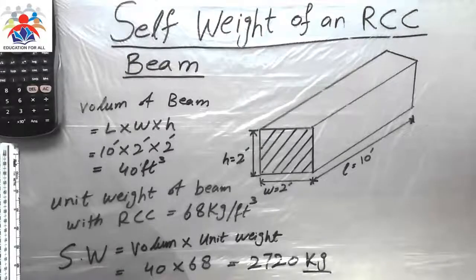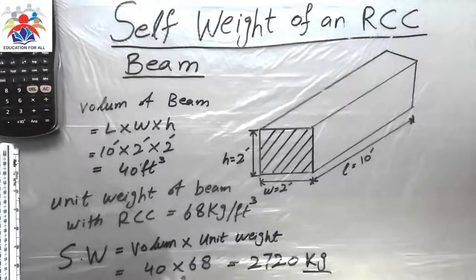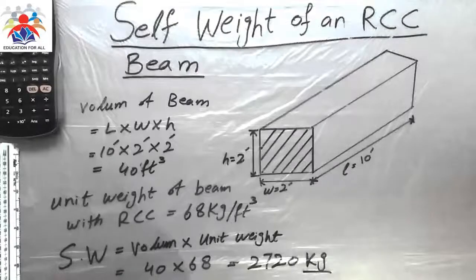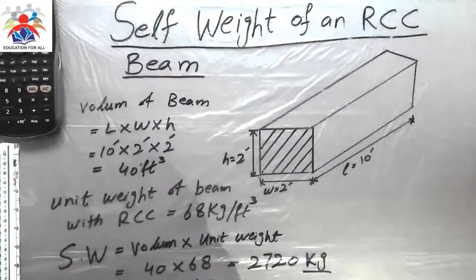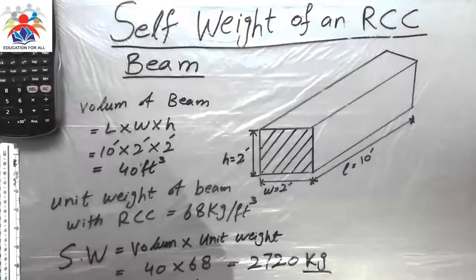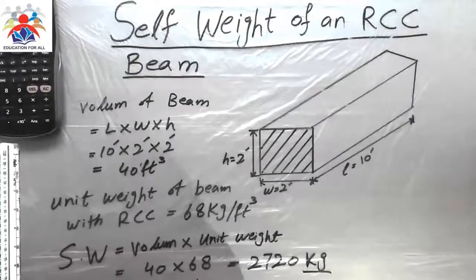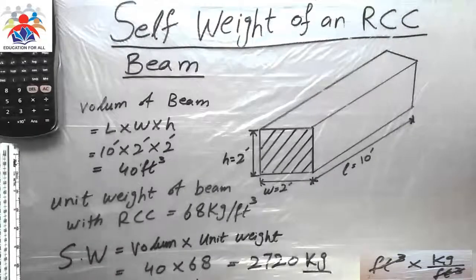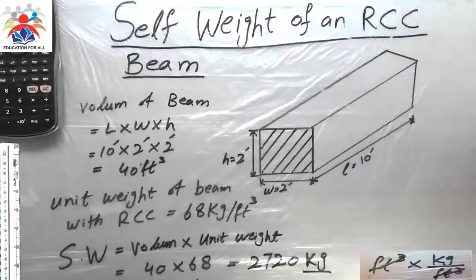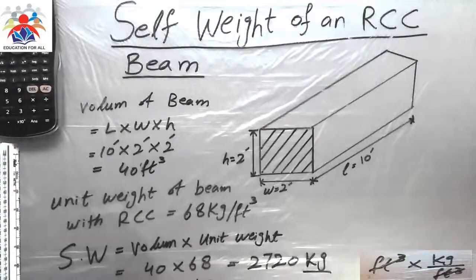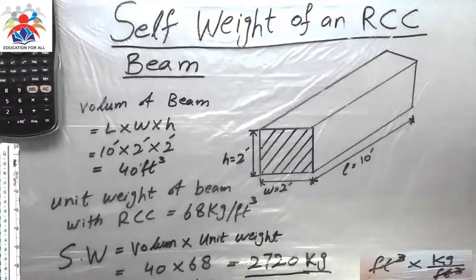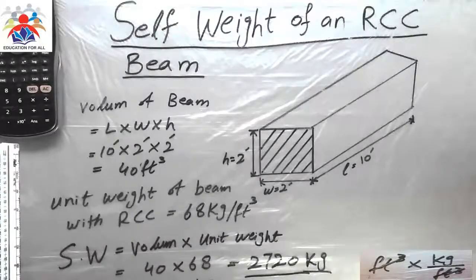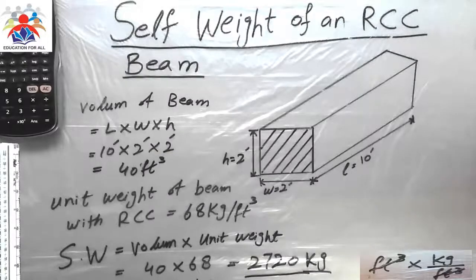The units are cubic feet multiply by kilogram per cubic feet. So cubic feet cancels out with cubic feet and we will be left with kilograms. That's how you have the answer. That's it for today, thank you for watching my video and please don't forget to subscribe to my channel.